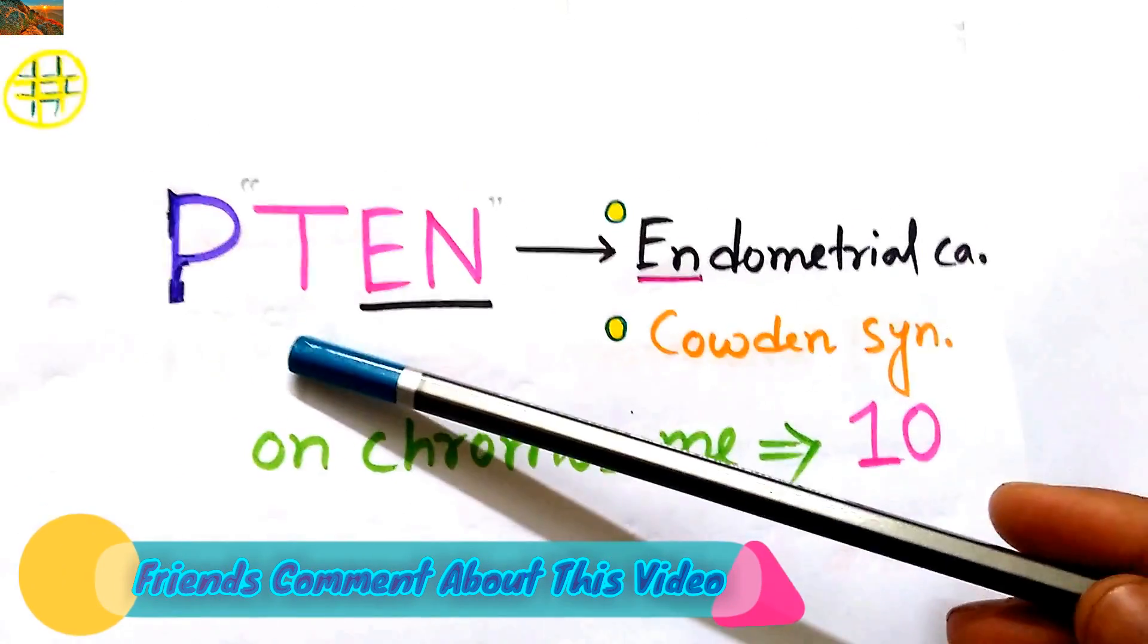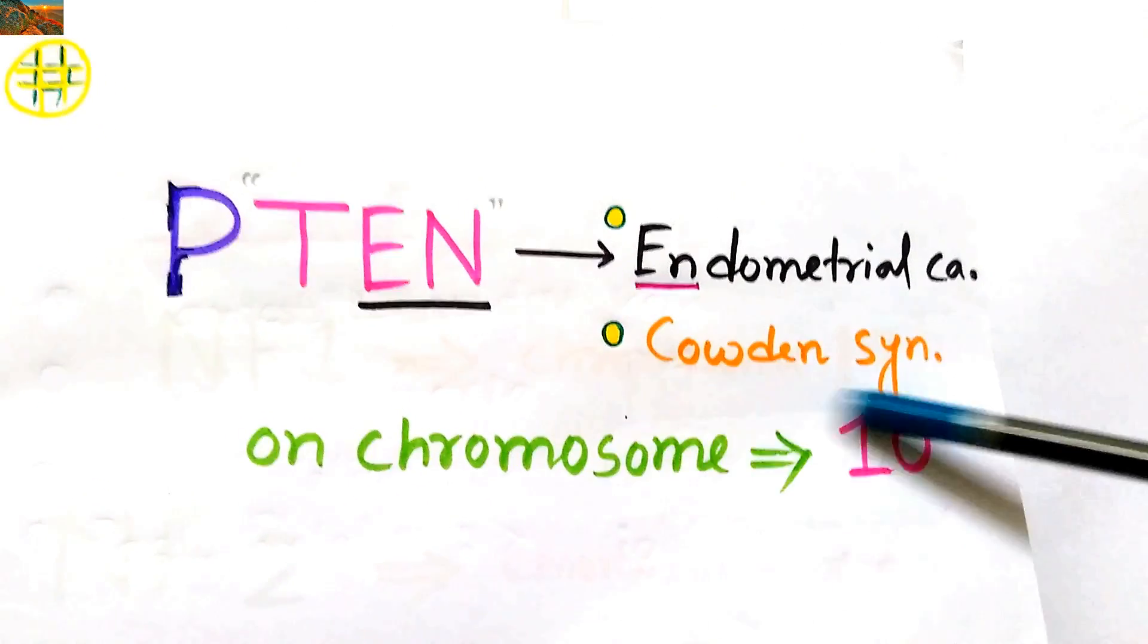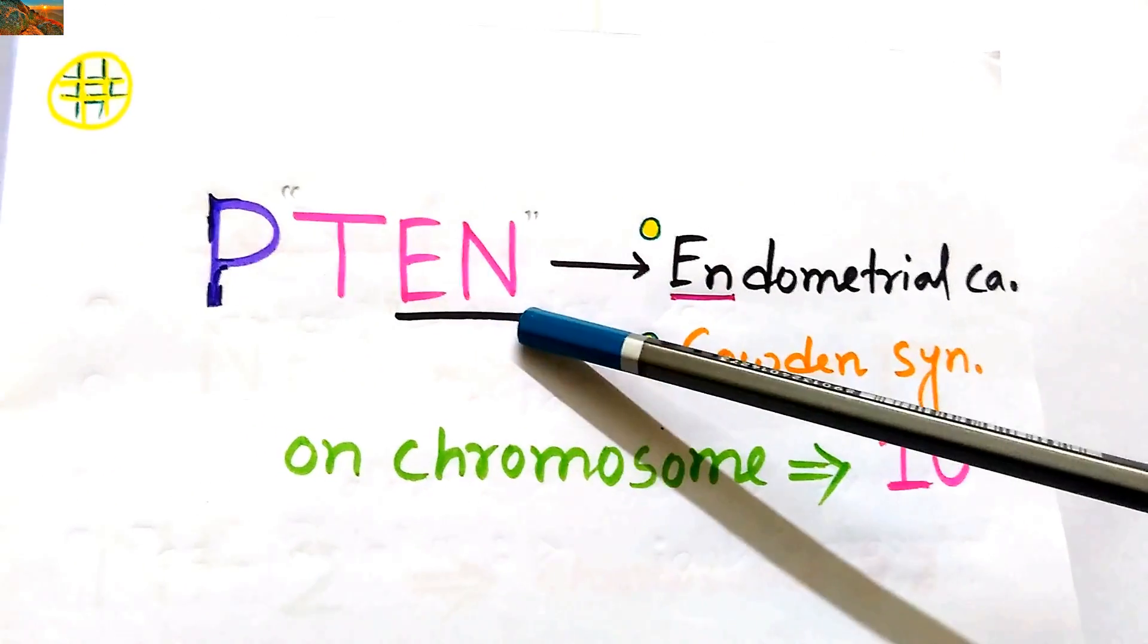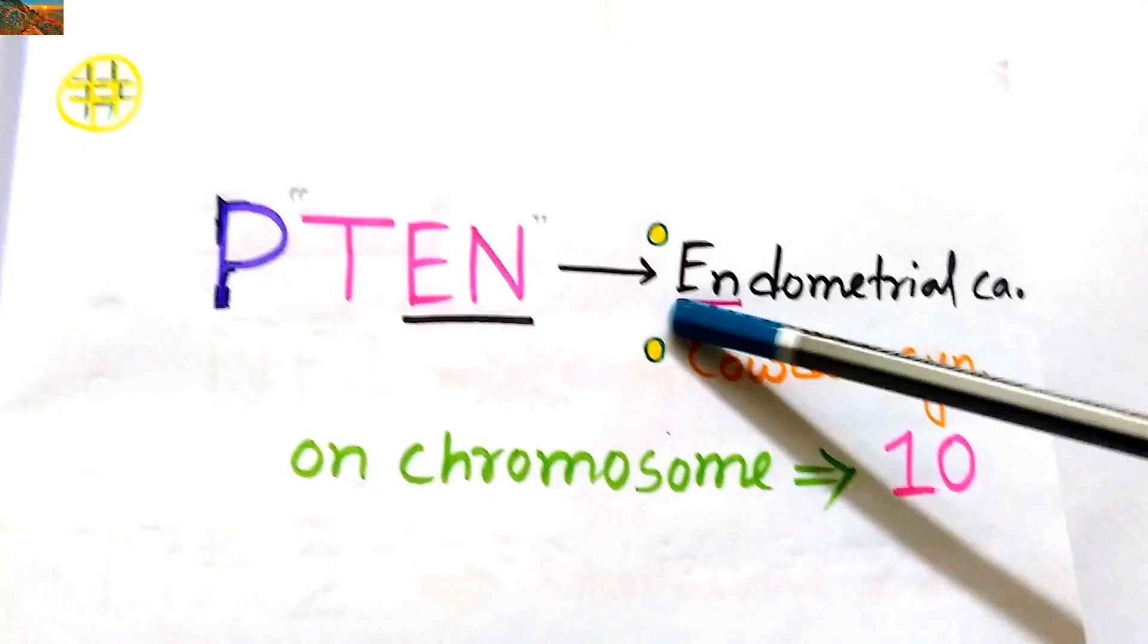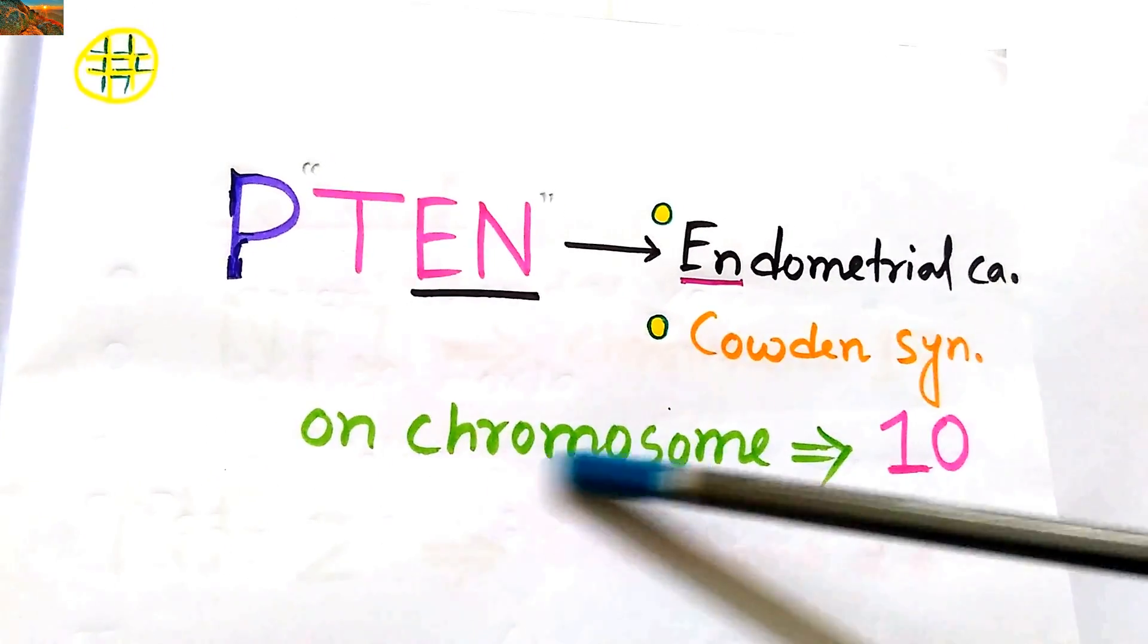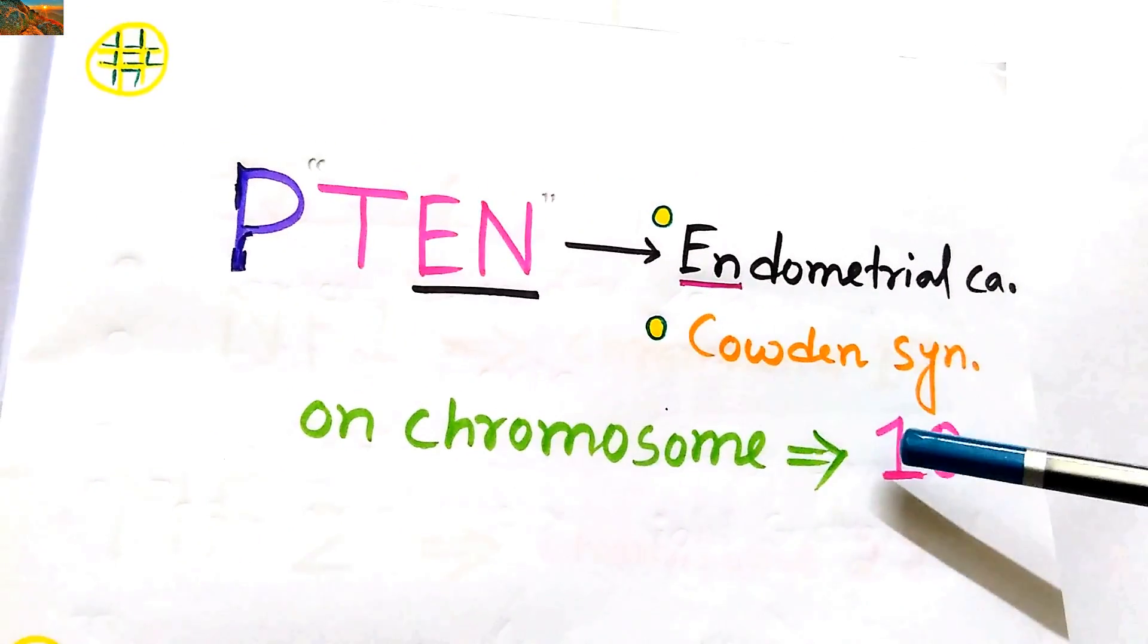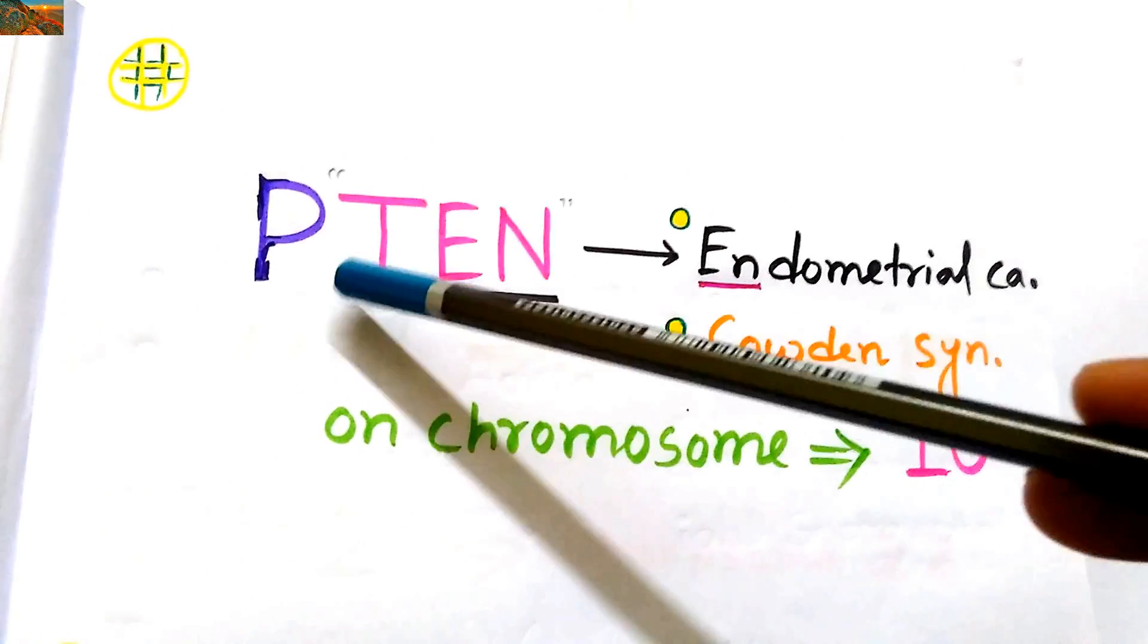Now it is PTEN gene which is responsible for endometrial carcinoma and Cowden syndrome. So EN, from EN we can find endometrial carcinoma that we can recall. The location is now chromosome 10. The 10 comes from the name itself, that is PTEN.